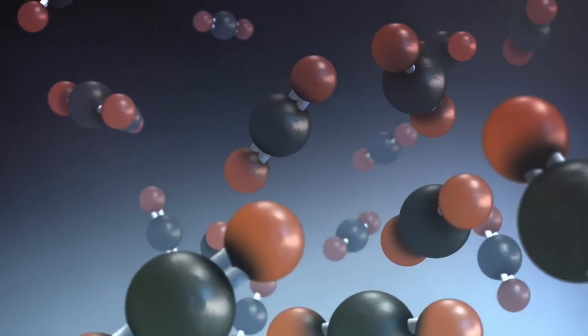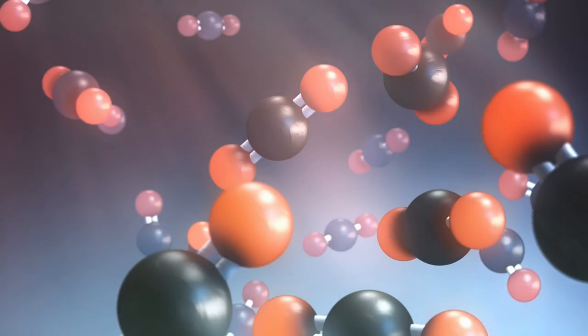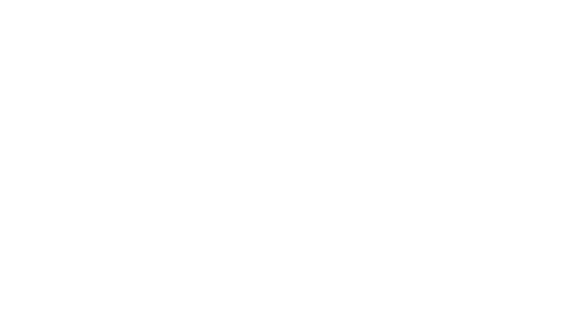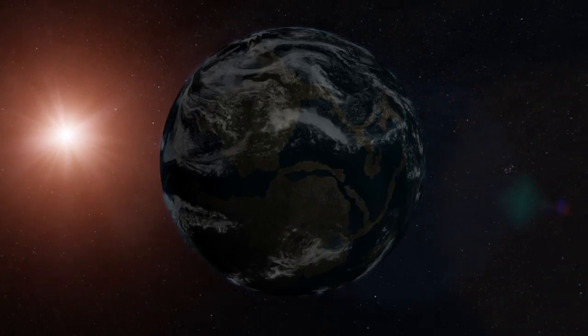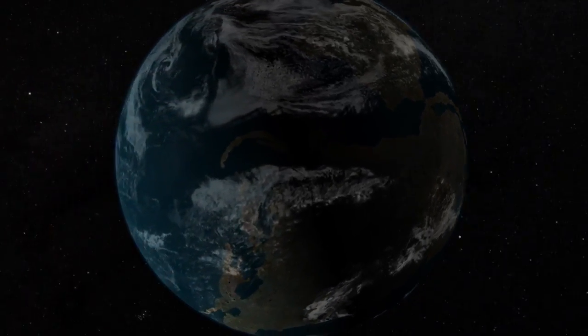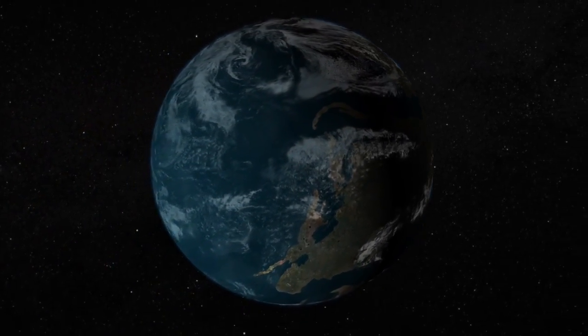Today, Earth stays warm because carbon dioxide in the atmosphere holds in reflected heat from the sun. But four billion years ago, the Earth received less warmth because the sun was a young star and produced less heat.